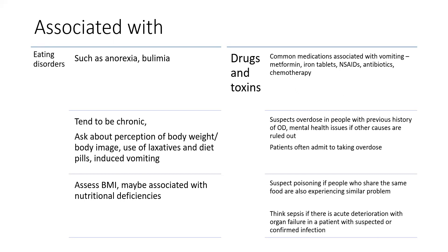A lot of medications can cause gastrointestinal upset, either in their therapeutic or toxic concentration. In cases of food poisoning, there is usually a history of consumption of unhygienic or undercooked food, and family or friends sharing the same symptoms. Sepsis is also an important differential, especially in those who are rapidly deteriorating.